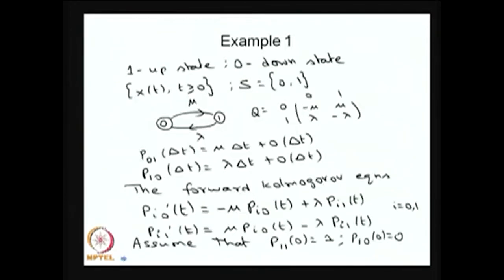Before going to the limiting distribution, let me give an example for the continuous time Markov chain to get the time-dependent solution. This example is the simplest case: a two-state continuous time Markov chain. The default one is time-homogeneous. The state space consists of states 1 and 0. State 1 can be considered the up or operational state, and state 0 is the down or non-operational state. This can be visualized for any model whose dynamics are described with two states where the Markov property is satisfied.